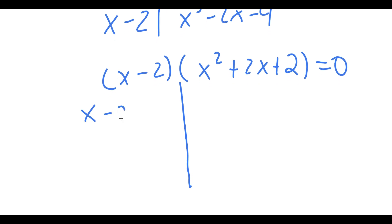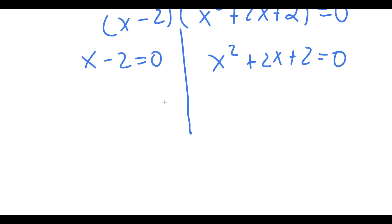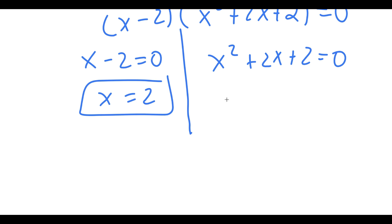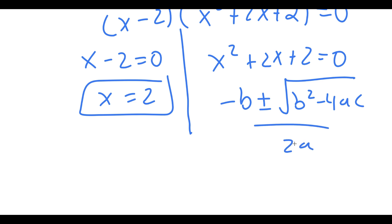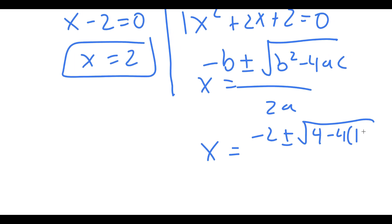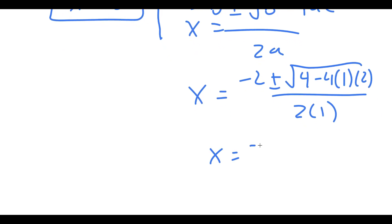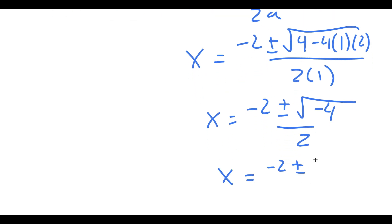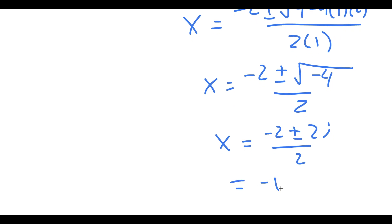This gives me two equations: x minus 2 is equal to 0, and x squared plus 2x plus 2 is equal to 0. For x minus 2 equals 0, x is obviously equal to 2. For x squared plus 2x plus 2 equals 0, I use the quadratic formula: x equals negative 2 plus or minus the square root of 4 minus 4 times 1 times 2, all over 2. This equals negative 2 plus or minus the square root of negative 4 over 2, which equals negative 2 plus or minus 2i over 2, giving x equals negative 1 plus or minus i.